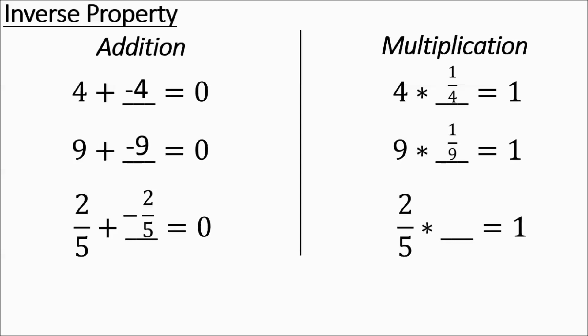And then 2 fifths — this one's fairly easy. 2 fifths times something equals 1 — it's going to be 5 over 2. You can sit down with a teacher and talk about the math logic behind that, but anything times its reciprocal equals 1.